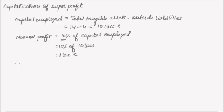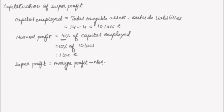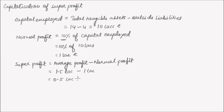Now we calculate the super profit. Super profit is profit over and above normal profit, so we deduct normal profit from average profit. Average profit was Rs. 1.5 lakhs and normal profit was Rs. 1 lakh, so super profit amounts to Rs. 0.5 lakh, or Rs. 50,000.